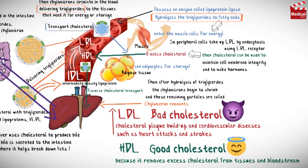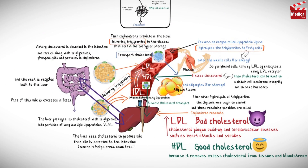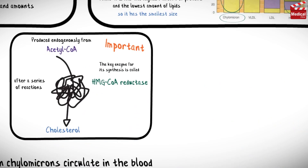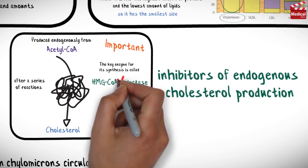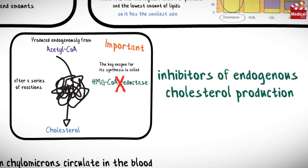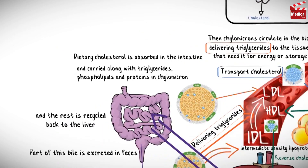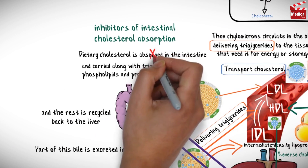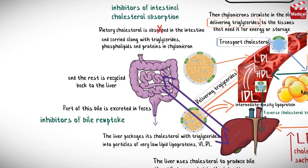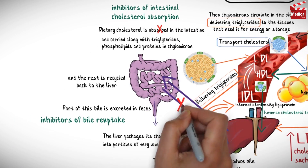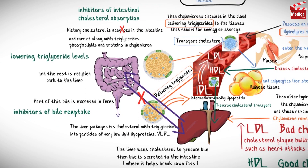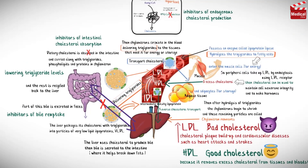So now we can conclude the mechanisms of the drugs used for hyperlipidemia: inhibitors of endogenous cholesterol production, which inhibit HMG-CoA reductase; inhibitors of intestinal cholesterol absorption; inhibitors of bile reuptake; and agents lowering triglyceride levels. There are other types and details we'll discuss in the upcoming lectures.